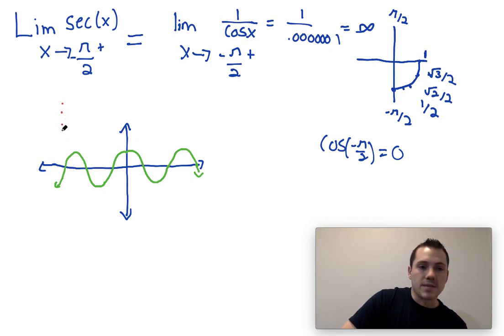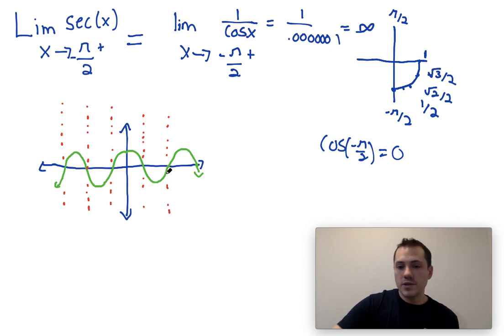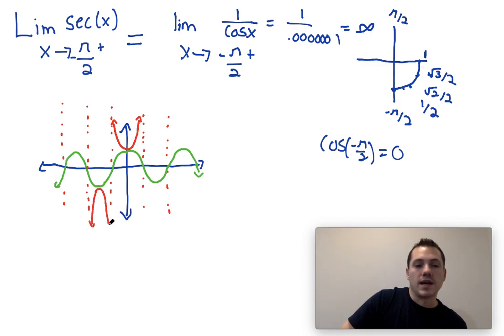Now, since secant is 1 over cosine, the secant graph is going to be undefined where cosine is 0, so we're going to have vertical asymptotes at that point. I'm not going to draw all of these, but maybe just one more. If we do 1 over cosine, our secant graph ends up looking something like this, with all these points of discontinuity at vertical asymptotes. This would just continue in both directions.